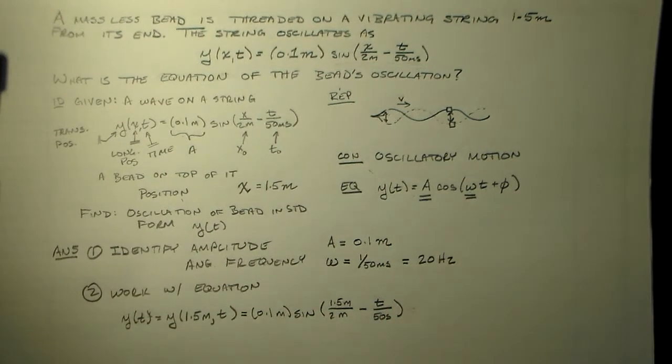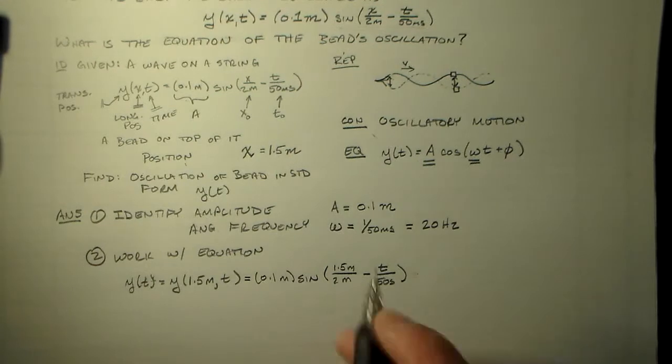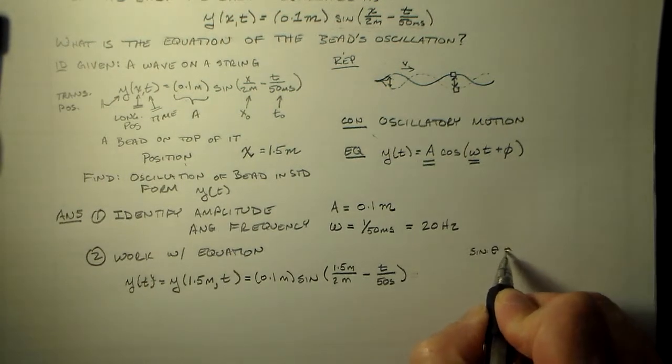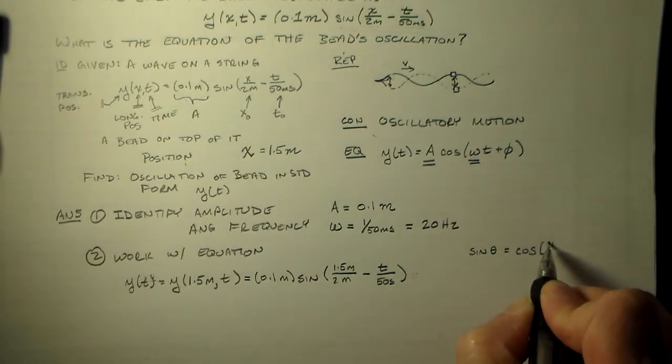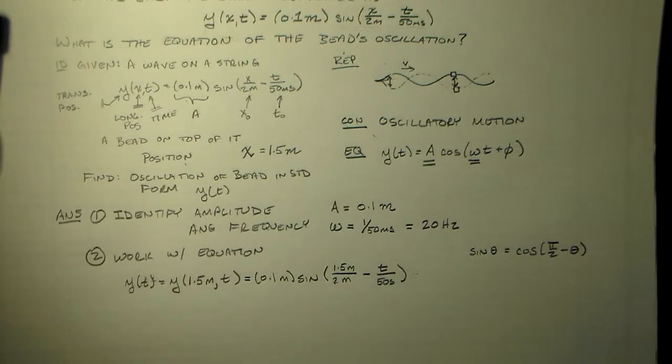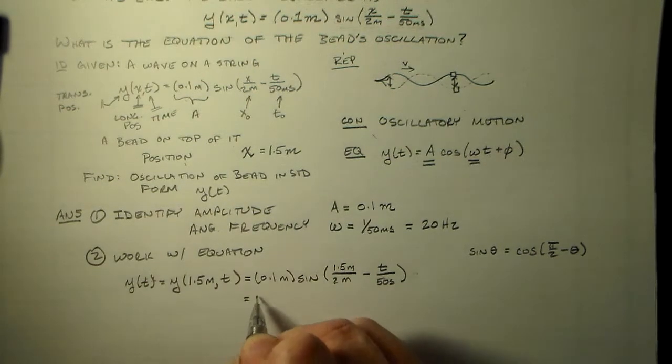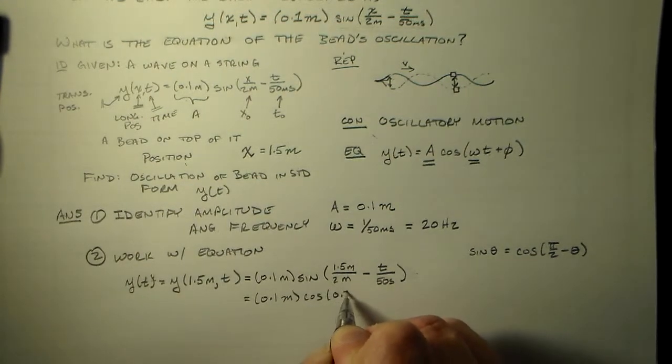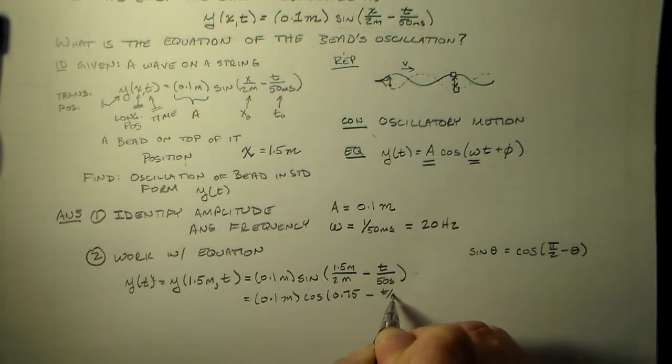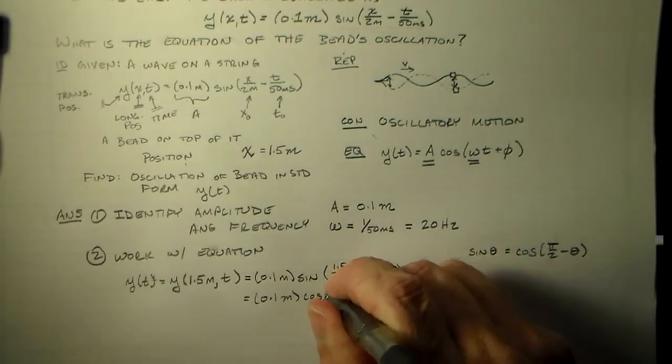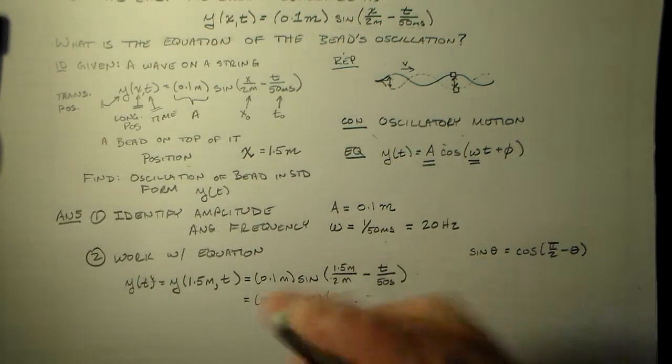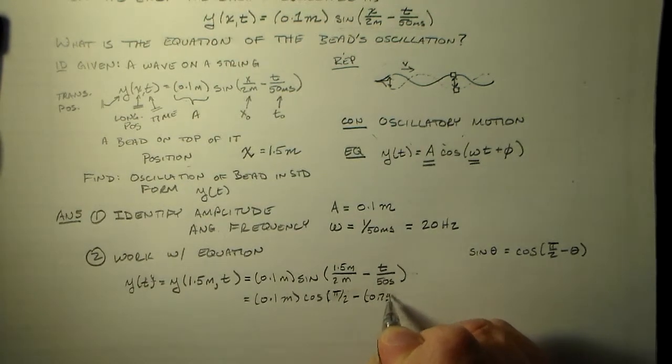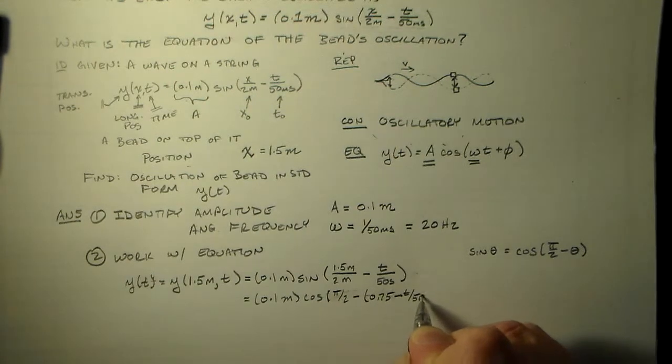Which is equal to 0.1 meters times the sine of 1.5 meters over 2 meters minus t over 50 seconds. Right? Which is equal to... Now. So we want to use a trig identity here I think. Right? A trig identity would be good. And I'd say that sine θ is equal to cosine of π/2 minus θ. 0.75 minus t over 50 seconds. So we have 0.1 meters is equal to cosine of π/2 minus 0.75 minus t over 50 seconds.